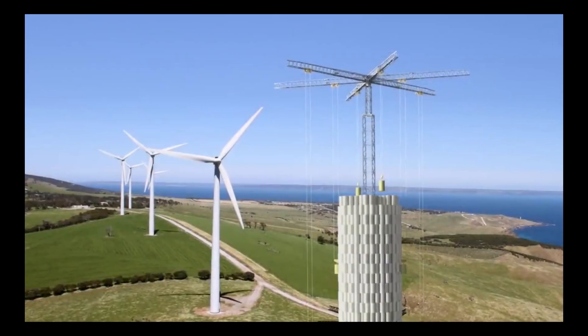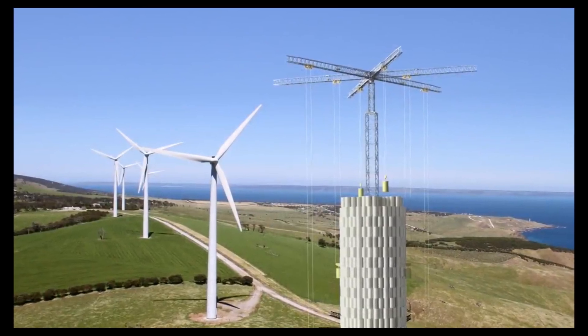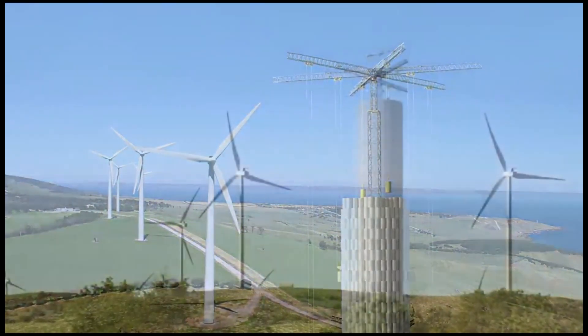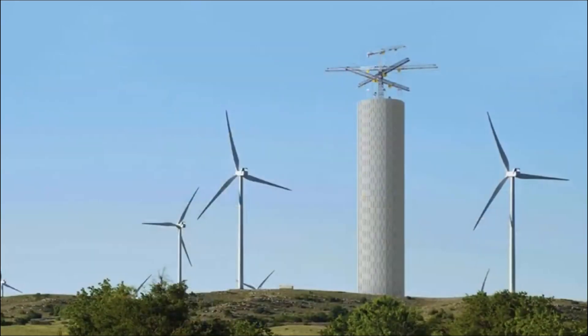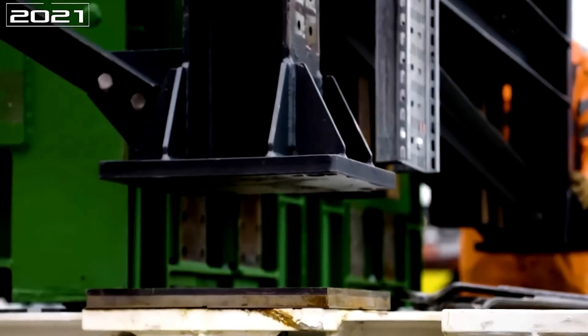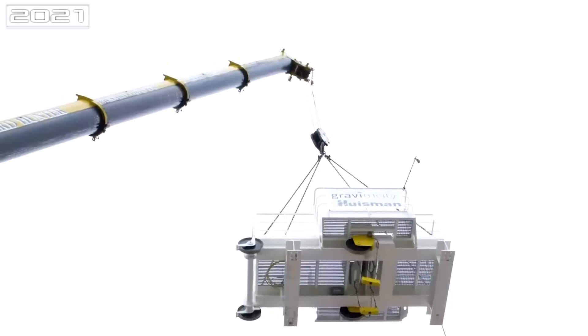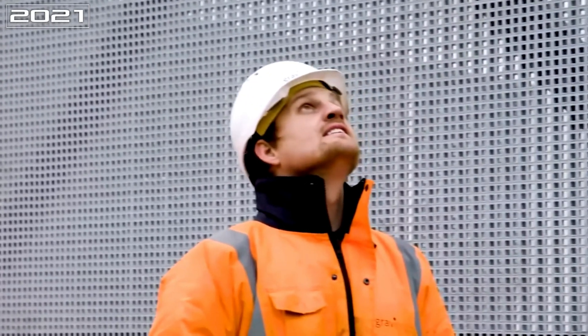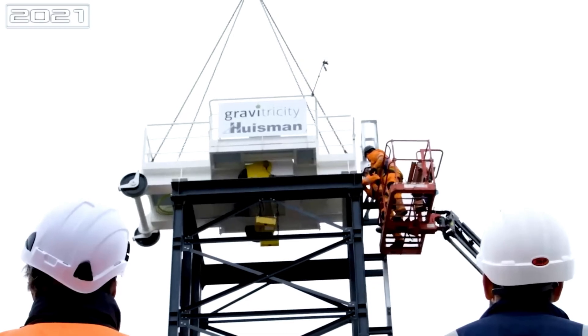The storage medium can be any heavy object that can be moved vertically, such as a concrete block, a steel weight, or a rock. The generator can be an electric generator, a hydraulic turbine, or a mechanical gearbox that can convert the kinetic energy of the falling object into electricity.